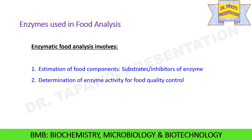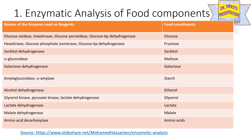Enzymes are also used as reagents for various food analyses. Enzymatic food analysis involves estimation of food components which can be both the substrates or inhibitors of enzymes and determination of enzyme activity for food quality control. Glucose oxidase, hexokinase, glucose peroxidase and glucose-6-phosphate dehydrogenase enzyme activities are estimated in order to check glucose content present in the food material.